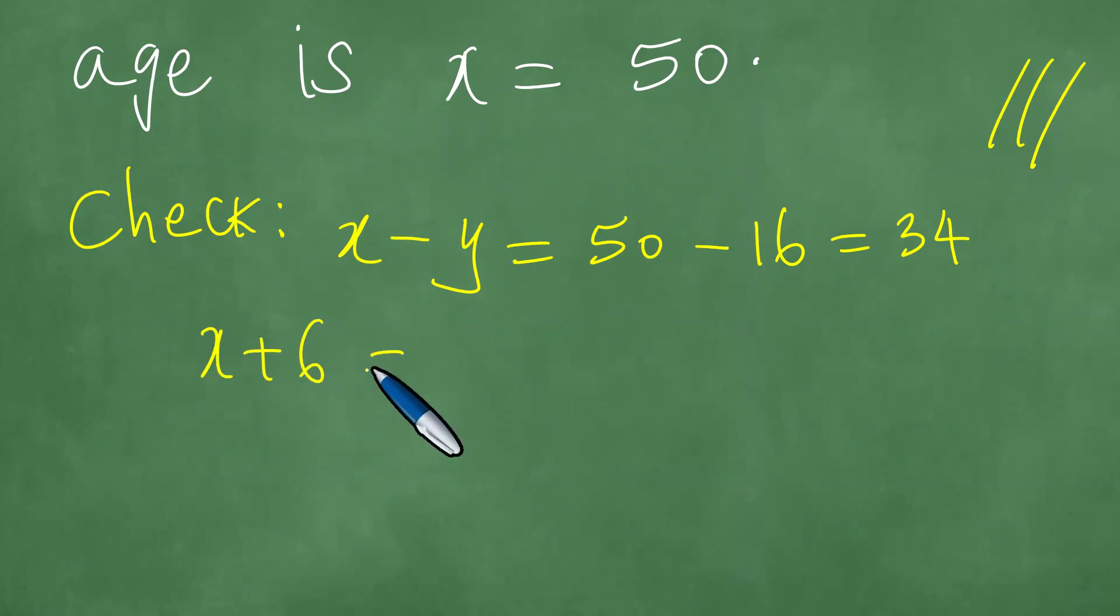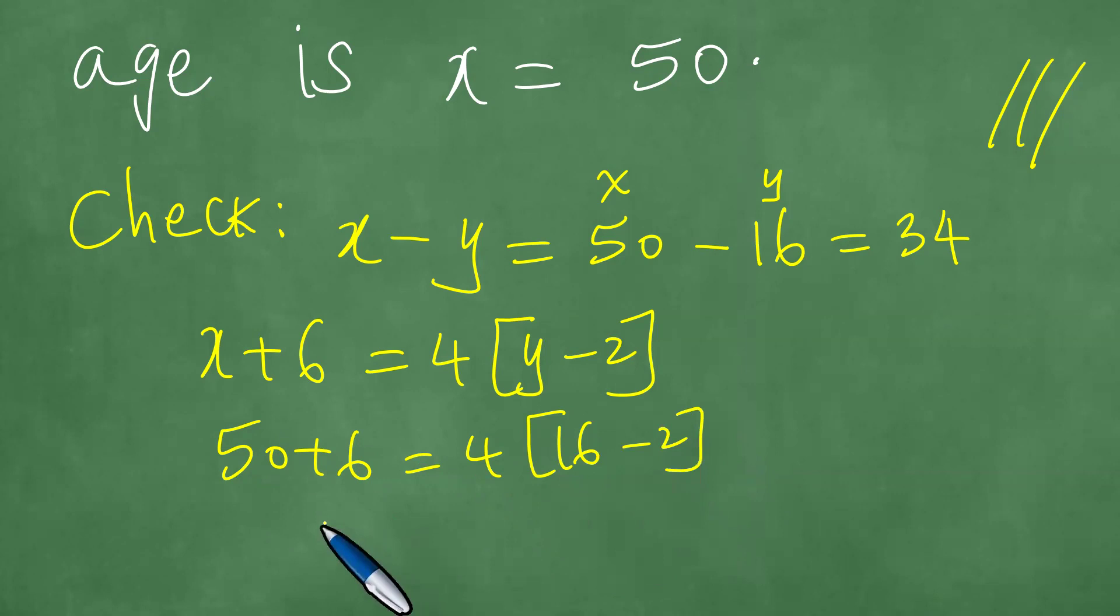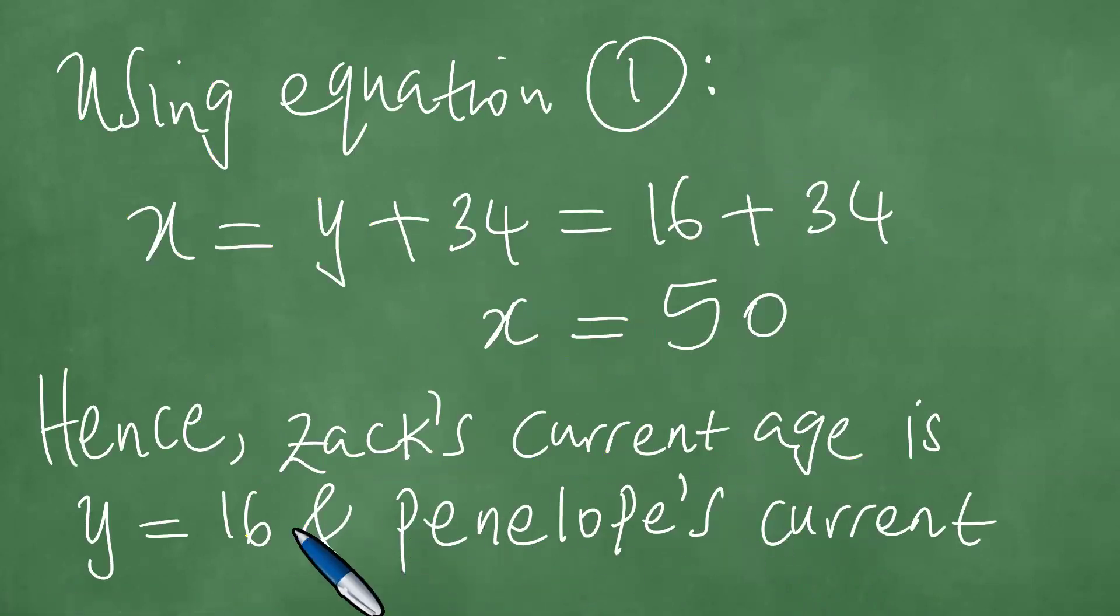And then we proceed to check with the other equation. So we said in six years, this will be four times Z's age two years ago. Meaning that we agree, this is our X, and Y is 16 as we've got that. And here we have X plus 6, which is 4 into the Y is 16 minus 2, which is 56, which is 4 into 14. And what is 4 times 14? 4 times 14 is 56, meaning this confirms the fact that Penelope's age is indeed 50, and also Z's current age is 16.